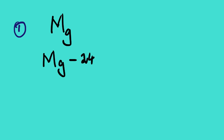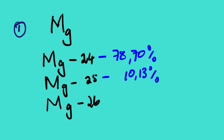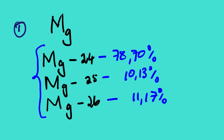Let us look at the first example, which is the average atomic mass of magnesium. Magnesium has three isotopes. The first one is magnesium-24, the second one is magnesium-25, and the third one is magnesium-26. Their percentage abundances are: the first one is 78.70%, the second is 10.13%, and the third one is 11.17%. These are the isotopes of magnesium. We need to calculate the average atomic mass of magnesium.